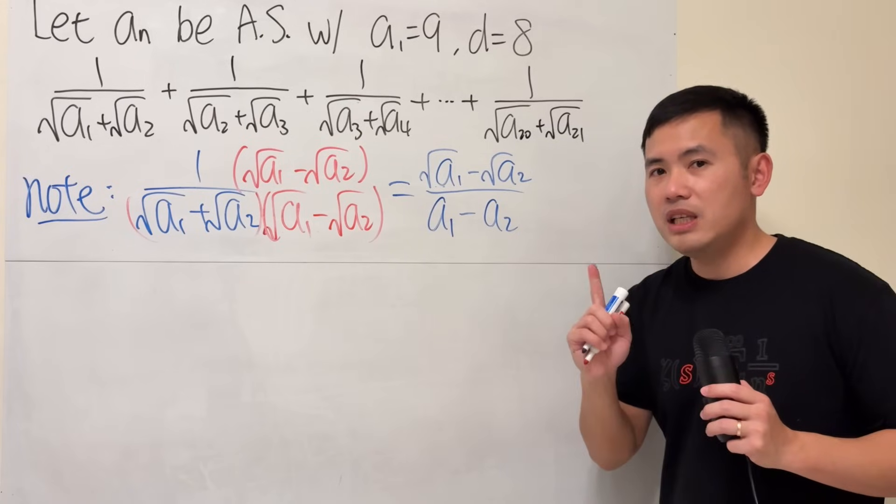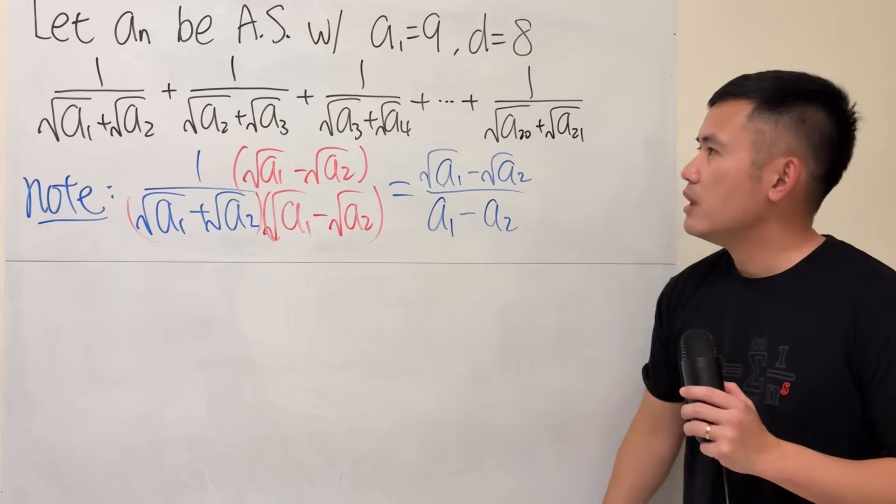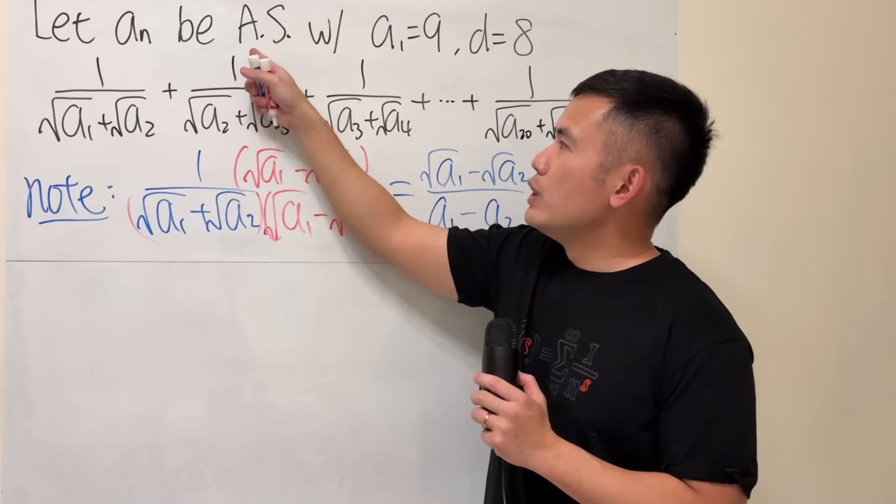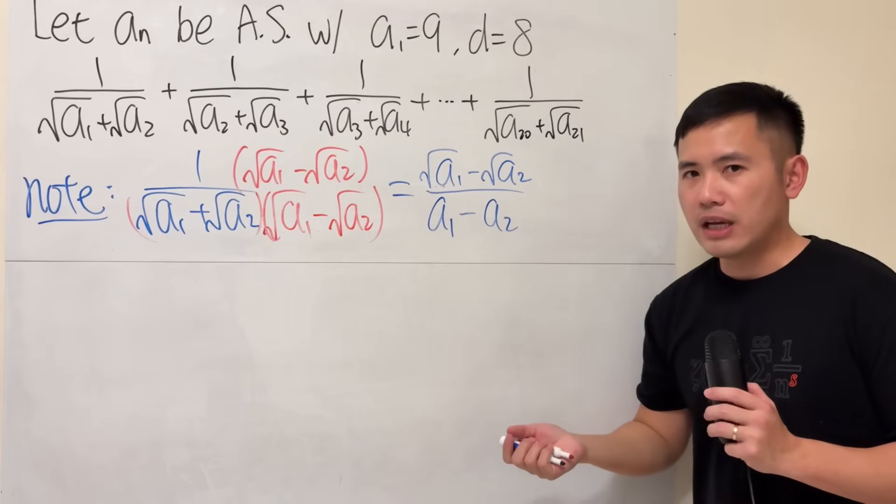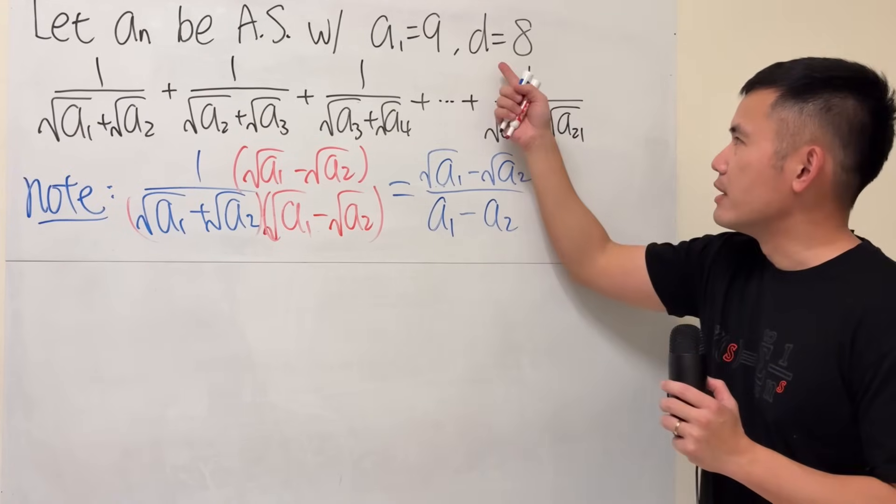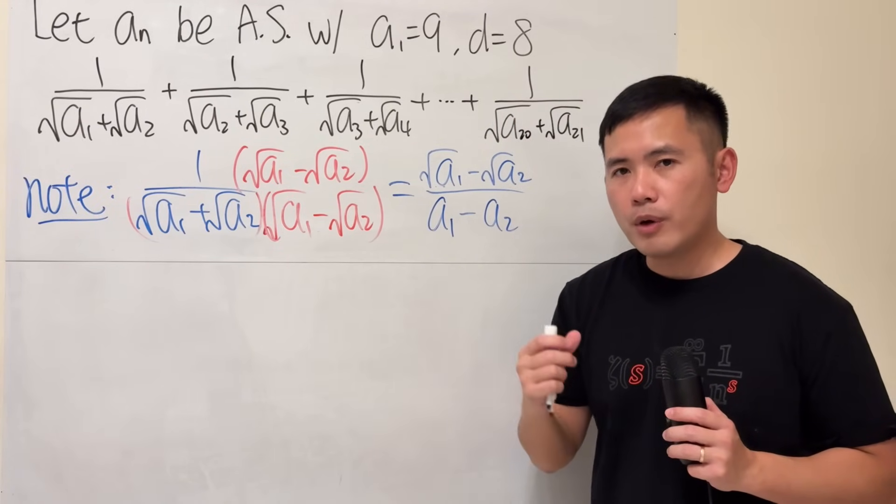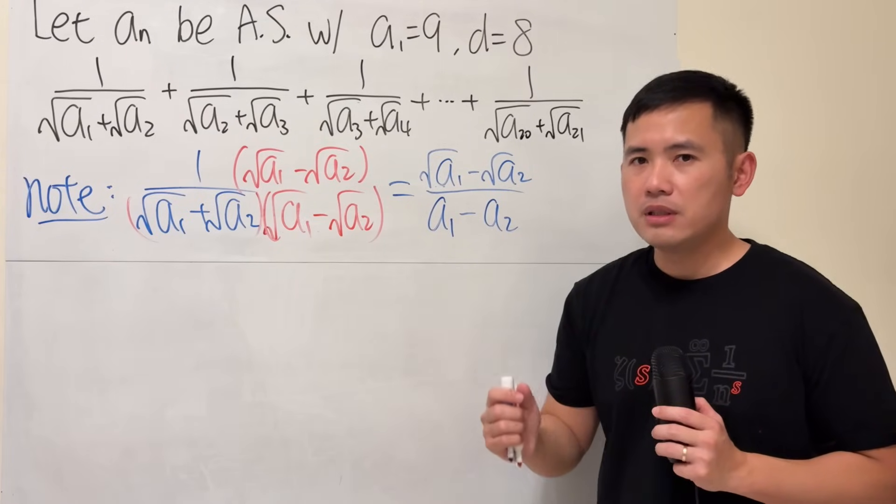Well, there's one key thing that you have to know. a_n is a what? It's an arithmetic sequence. So what's the property for that? Well, we have a common difference, meaning that we just keep adding the same number over and over to produce the terms in the sequence.